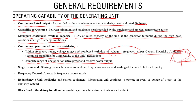A single command for starting the unit in auto mode up to synchronization and loading to full capacity quickly is required, reflecting the ability of hydro plants to start very quickly. There is also a frequency control requirement: automatic frequency control mode — FGMO or RGMO as applicable — should be available with the unit having this frequency controlling capability.